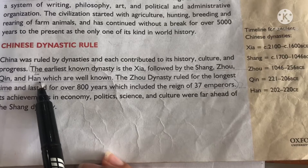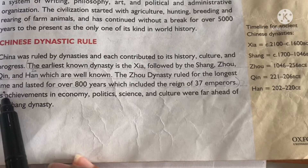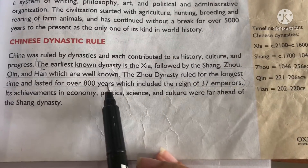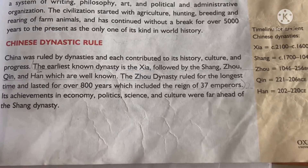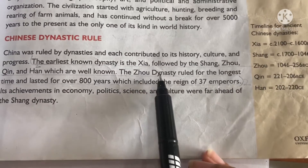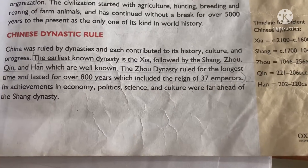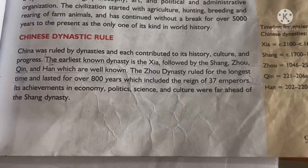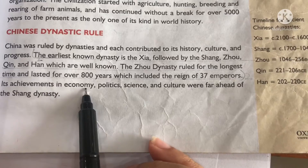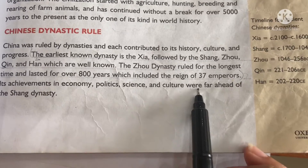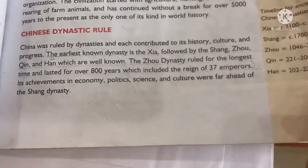The Zhou dynasty ruled for the longest time — over 800 years — which included the reign of 37 emperors. Its achievements in economy, politics, science, and culture were far ahead of the Shang dynasty.